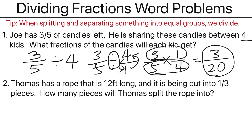Now for the second example, Thomas has a rope that is 12 feet long, and it is being cut into one-third pieces. How many pieces will Thomas split that rope into? The first thing we want to look at is what are we trying to divide here. Based on the word problem, the rope is what we are trying to divide, and it is 12 feet long.